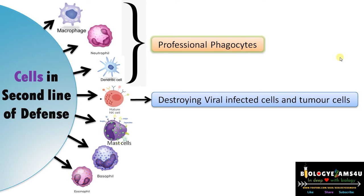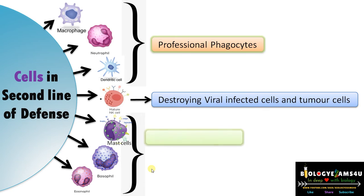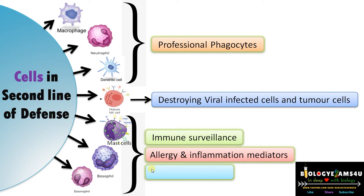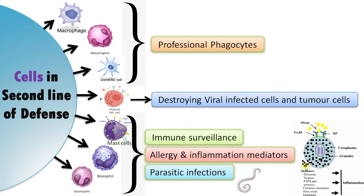Mast cells, basophils, and eosinophils all mediate allergic reactions and inflammatory responses. They have similar receptors but are found in different locations. Mast cells are tissue-resident cells involved in immediate hypersensitivity. Basophils are circulating cells involved in the late-phase allergic response. Eosinophils are present in the gastrointestinal tract. All three mediate allergic reactions and inflammation and are involved in immune surveillance, being particularly effective against parasitic infections.